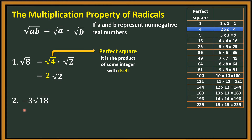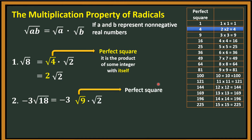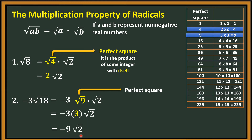Another example: negative 3 times the square root of 18. 18 is not a perfect square but we can factor it. We just copy negative 3. The factors of square root of 18 are square root of 9 times the square root of 2. Since 9 is a perfect square, the square root of 9 is 3. So we write negative 3 times 3 and copy square root of 2. Multiply the 3s — that is negative 9. The final answer is negative 9 square root of 2.